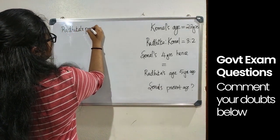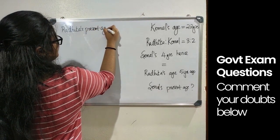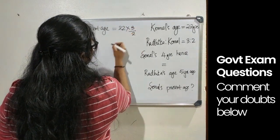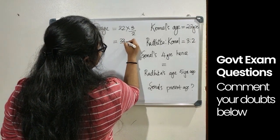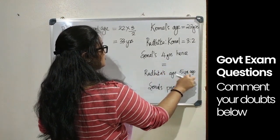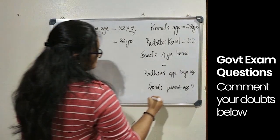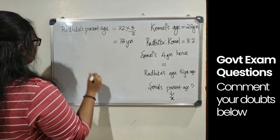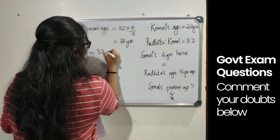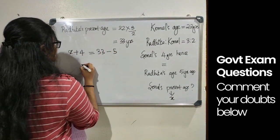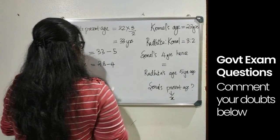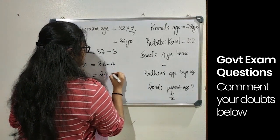Here it is given that Kamal's age is 22 years and Radhika's and Kamal's present age ratio is 3 is to 2. Therefore Radhika's present age is 22 into 3 by 2, that equals 33 years. Let Sonal's present age be X. Then X plus 4 equals 33 minus 5, which implies X equals 28 minus 4, that equals 24 years.